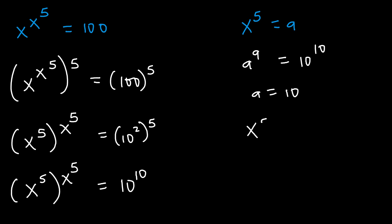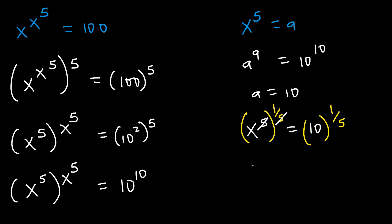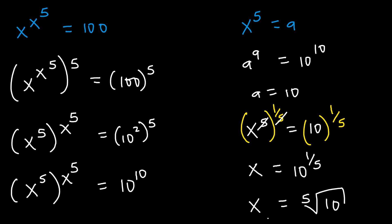Therefore, x to the power of 5 equals 10. And if we raise both sides to the power of 1 over 5, the 5 will cancel, and so we shall have x equaling to 10 to the power of 1 over 5. Therefore x equals the fifth root of 10, and that's our answer.